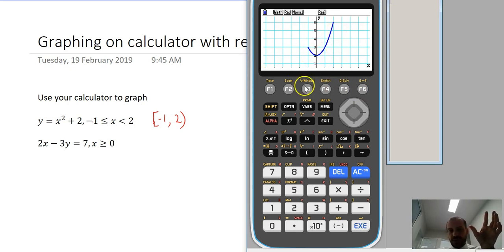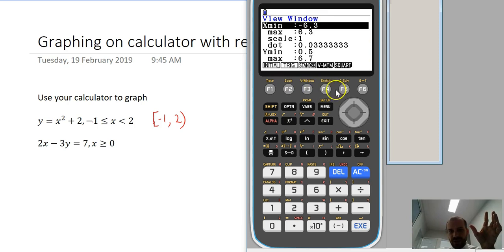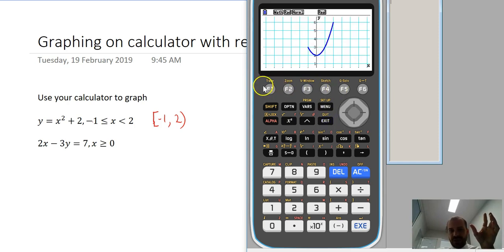Now if you can't see it on yours, probably press F3. Actually it'll go a bit faster here. Press the zoom button and then just go auto.